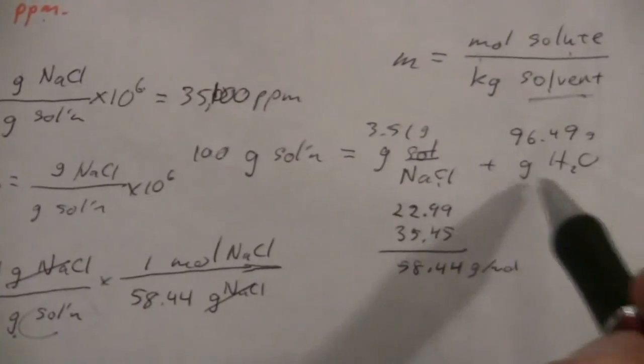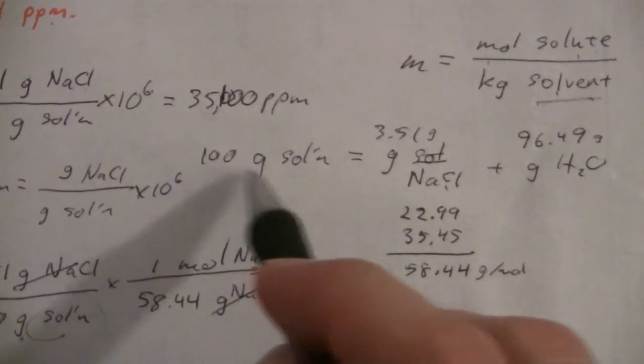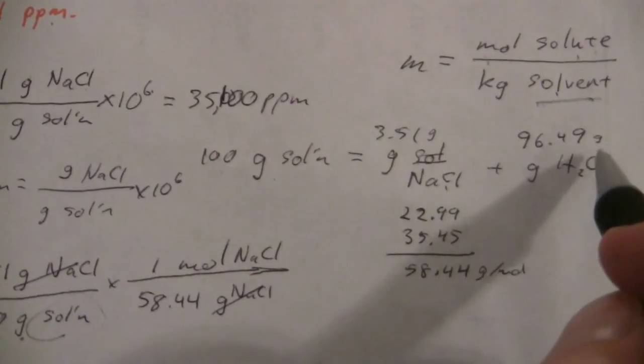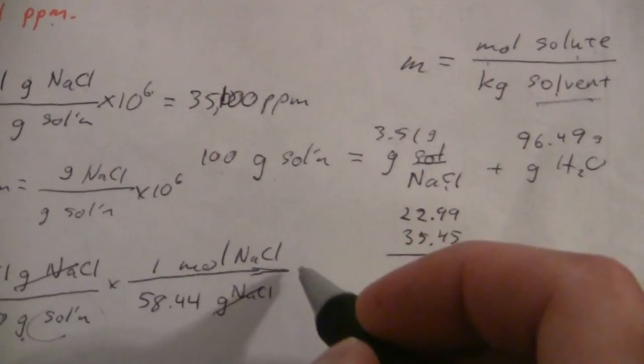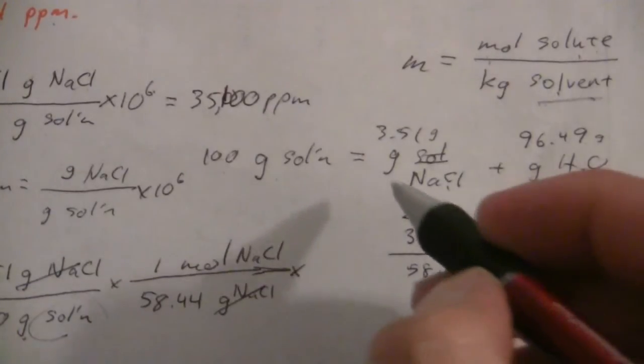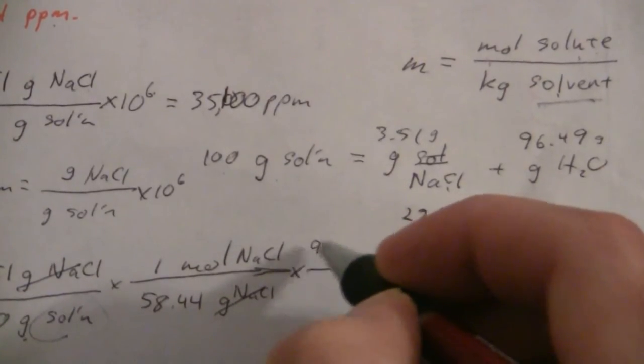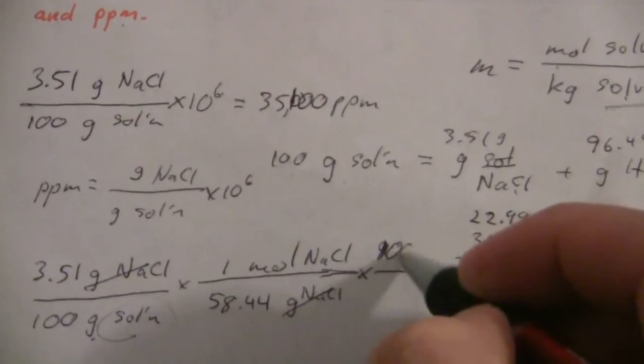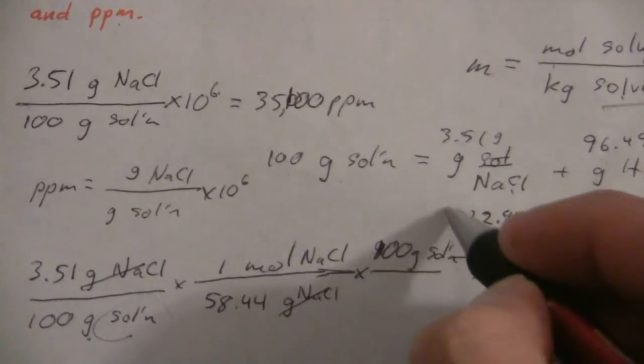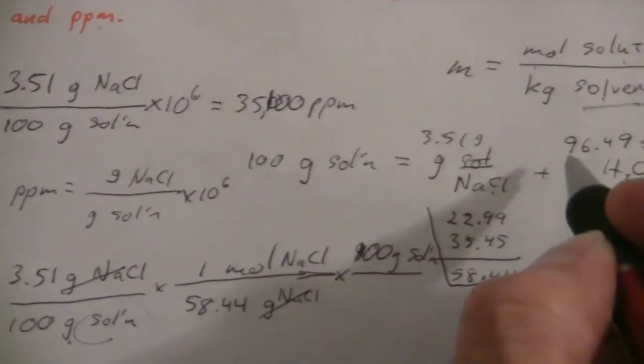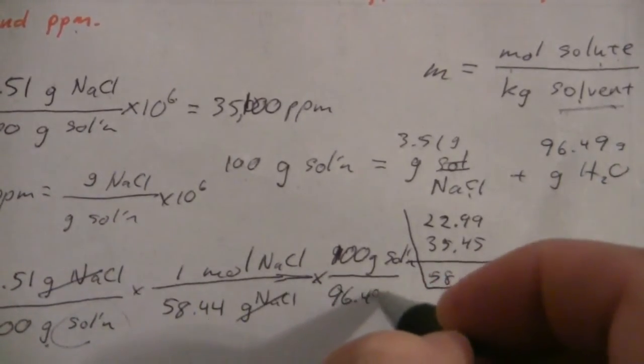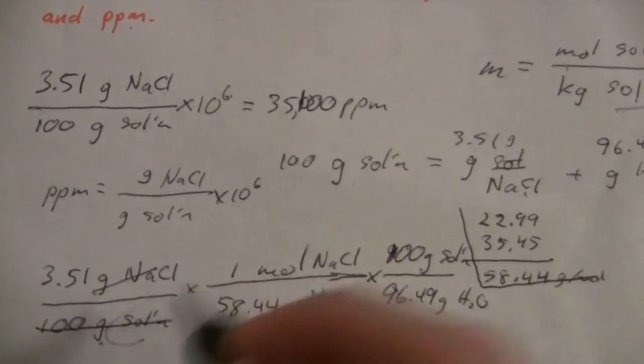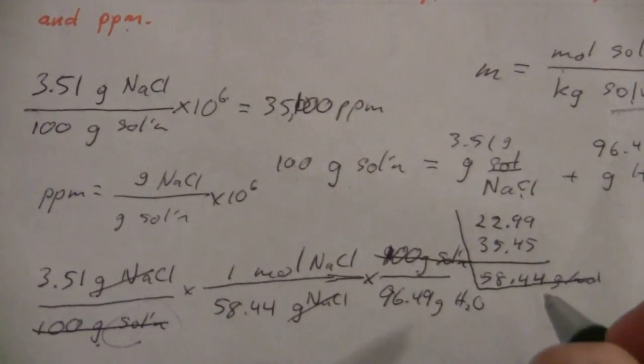Well, that's where we go to here, and we say, all right, well, I know that for a hundred grams of solution, 96.49 grams are water. So I can put that here. I'm going to have a hundred grams of solution, running out of space here, and 96.49 grams of water. So the whole thing, 100 grams of solution will cancel.